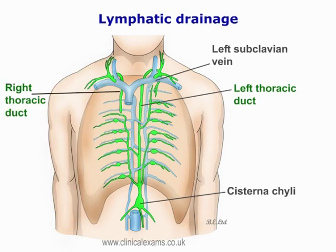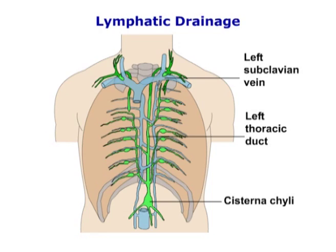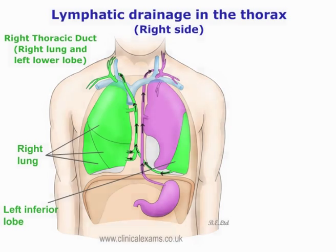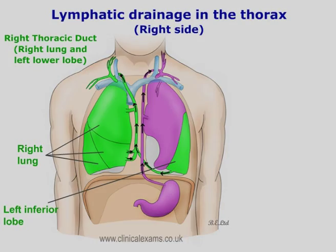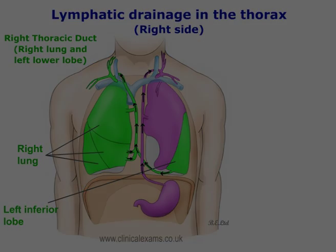Lymph nodes next to the bifurcation of the trachea drain into the bronchomediastinal lymph trunks. The right lung and left lower lobe drain into the right supraclavicular fossa.